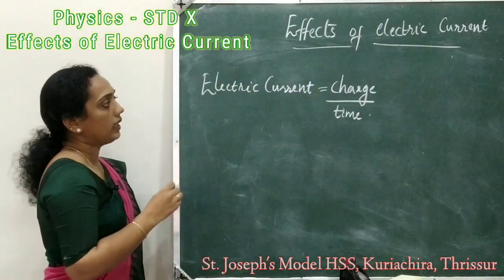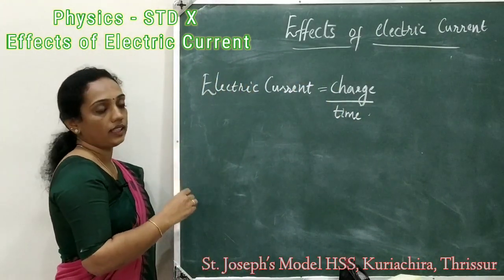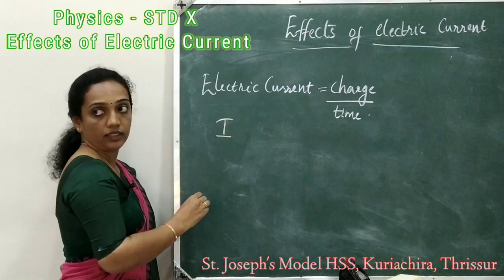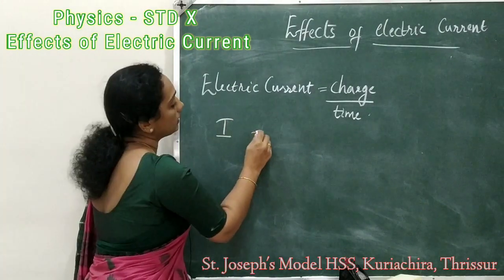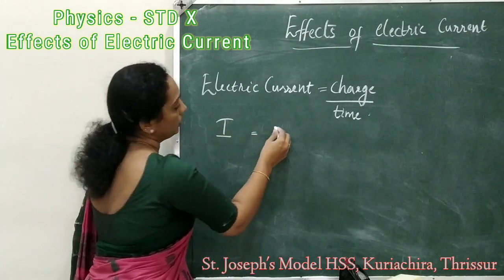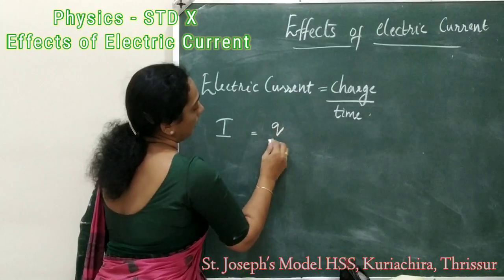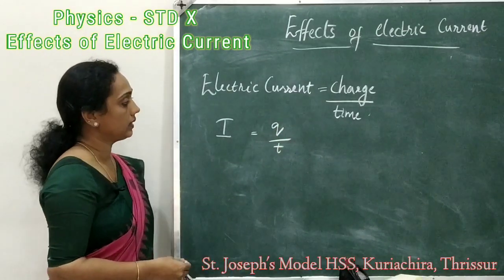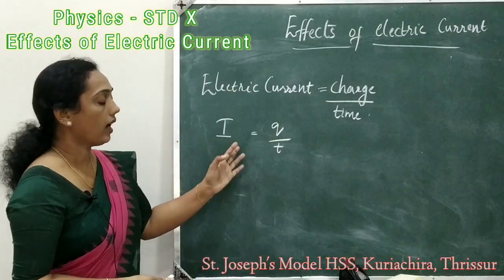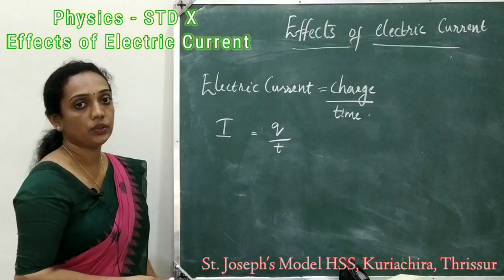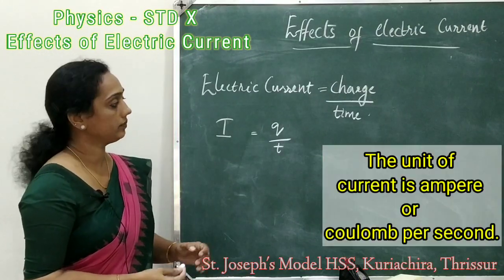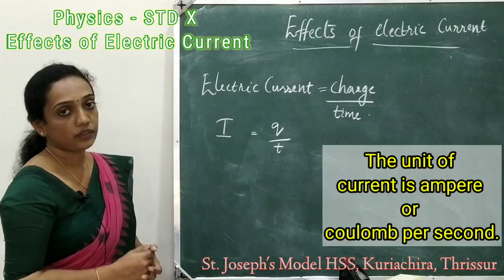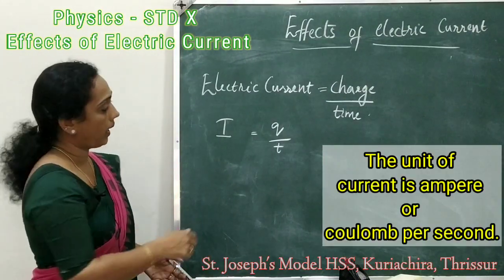Electric current is represented by the letter capital I, charge is represented by the letter Q, and t is the time. So the formula is I equal to Q divided by t. The unit of current is ampere.